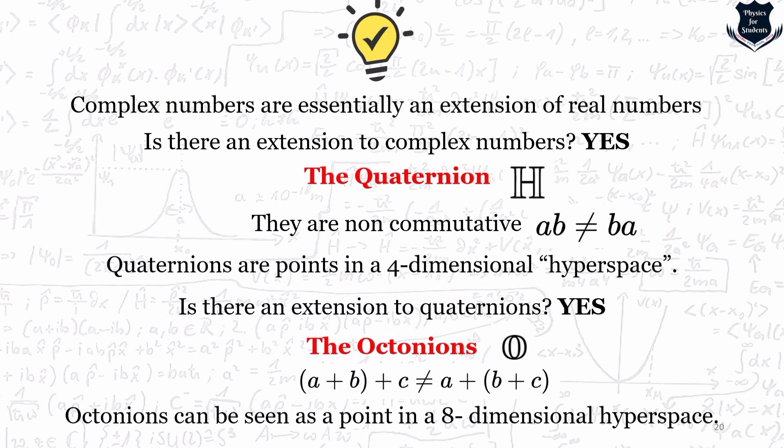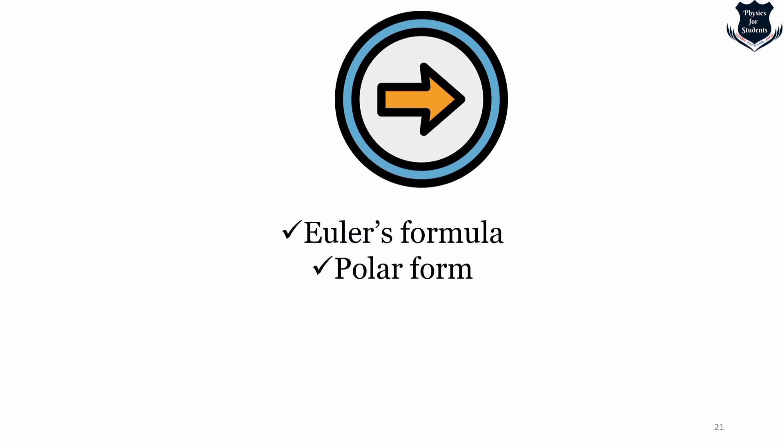That's it for today's video — short and crisp. We covered complex division, visualizing complex numbers using vectors, the complex plane, and some fascinating trivia. The next video will cover Euler's formula and polar form. Once we complete that, we are ready to jump into linear algebra — a fresh series that will help you develop further into quantum physics. Thank you very much for watching. Stay safe, stay happy, and please subscribe to Physics for Students.